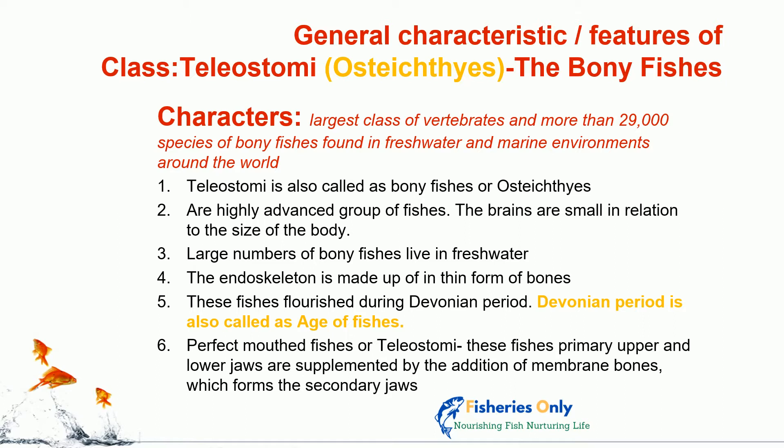Mostly these species come from the freshwater environment. Now we will see the characters. First character: Teleostomi is also called as bony fishes or Osteichthyes. The endoskeleton is made up of bones, that is why they are called bony fishes.